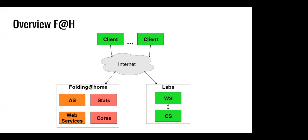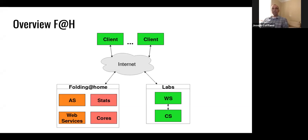Have you looked into a torrent type system to allow the clients to store parts of the data? That's been suggested. The big problem I see is the reason torrent works so well is because everybody wants the same data. With Folding at Home we want each client to get a different piece of data, not the same data. So that just doesn't work with this setup.